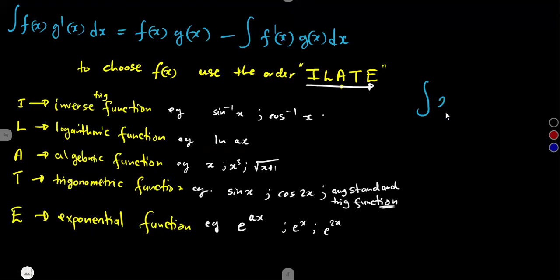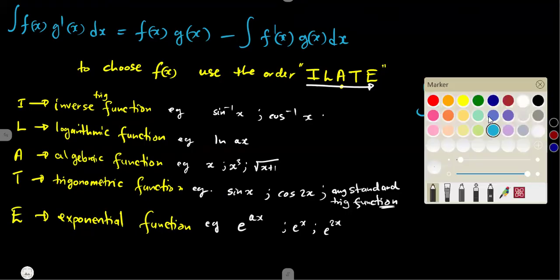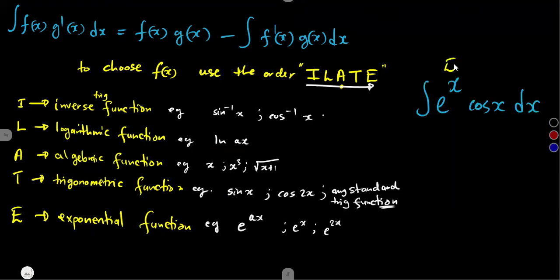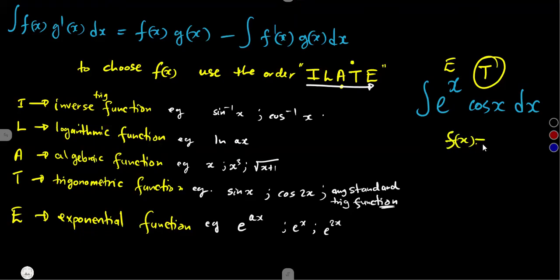Another example: you are given the integral of e^x·cos(x) dx. What are we given? An exponential and a trigonometric. According to the ILATE order, T comes before E, so the trigonometric starts. Therefore, we choose the trigonometric to be our f(x), meaning f(x) = cos(x).